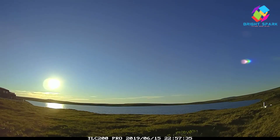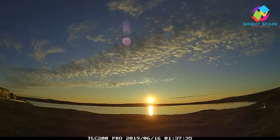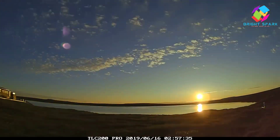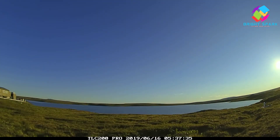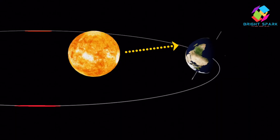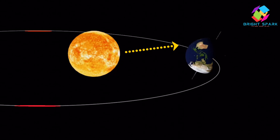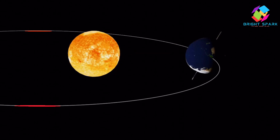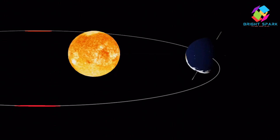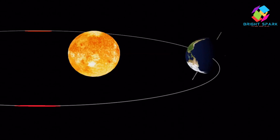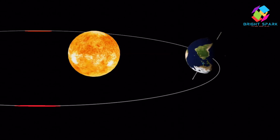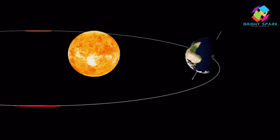But when it's summer in Antarctica, the sun doesn't set for months — they have their own version of the midnight sun! Also, the earth is actually closest to the sun in January, but it's still winter in the northern hemisphere. That's because distance doesn't matter as much — it's all about the tilt!